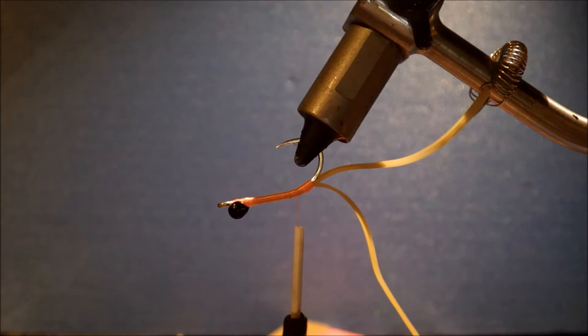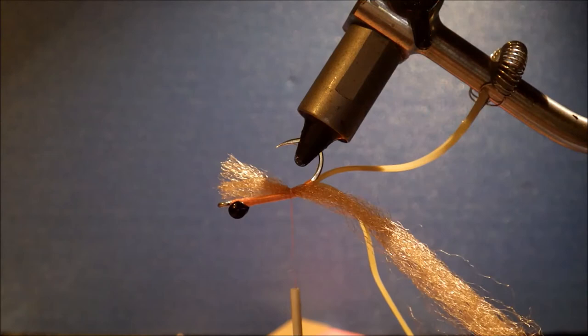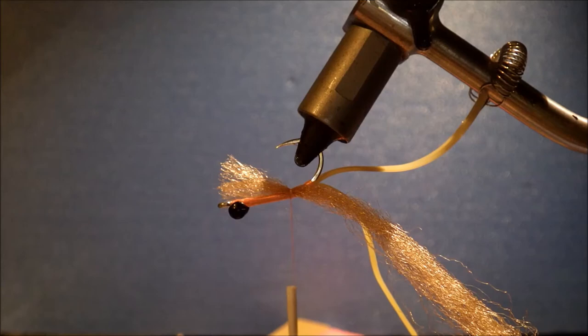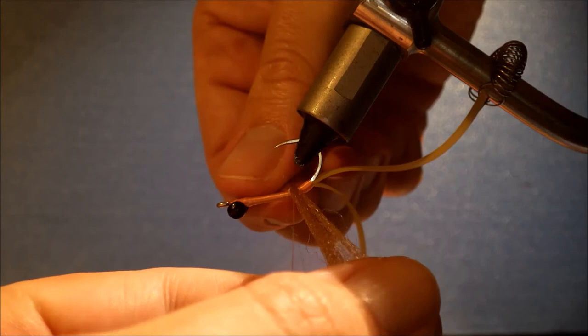And then I've got EP fibers here. The original calls for sparkle yarn, but I'm just using EP. It's just a good easy fiber to work with for crabs. And then I'm leaving the length long. I don't pre-cut that much when I'm tying a Merkin, because if you leave this long end, it gives you a bit of something to work with, especially once you've got a few bunches tied in.